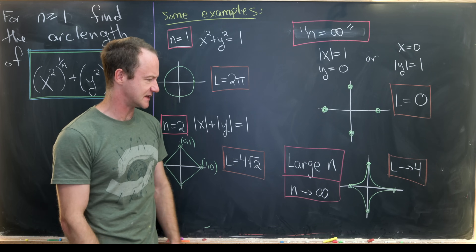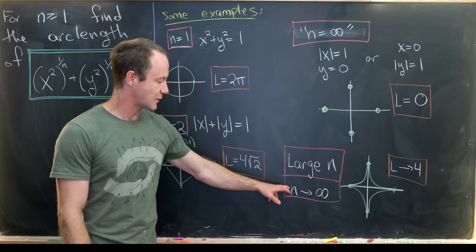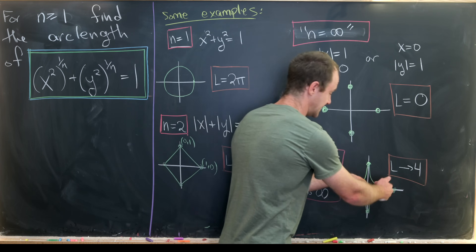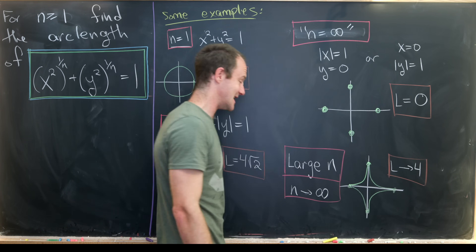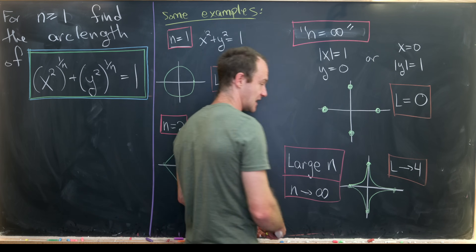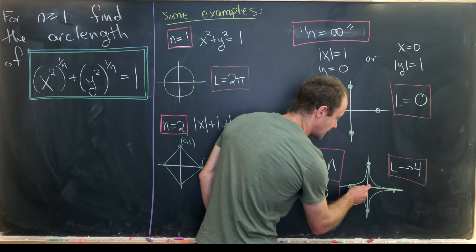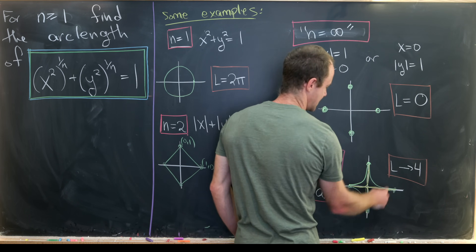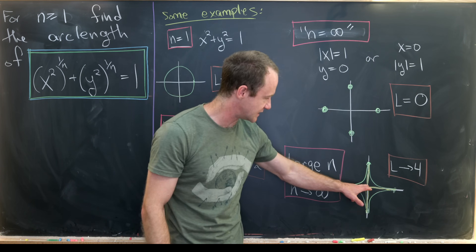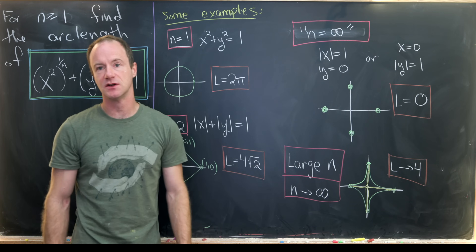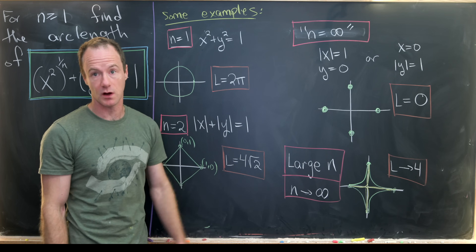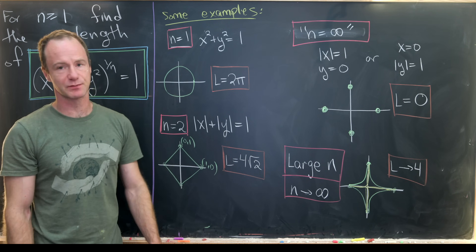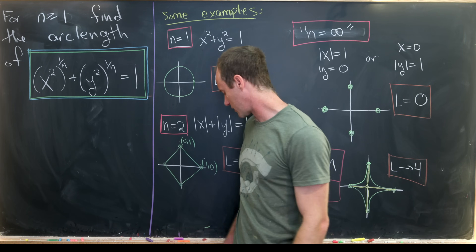Let's compare that to the case of large n approaching infinity. As n approaches infinity, the legs of the curve bend in towards the axes. For very large n, it looks like the legs are the axes themselves. So the limit of the arc length as n→∞ would be 4, because we have the distance between the origin and each of those four points, each equal to 1, giving 4 times 1.